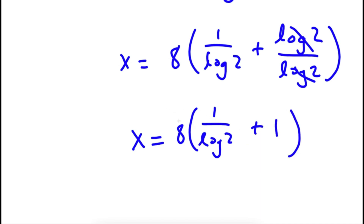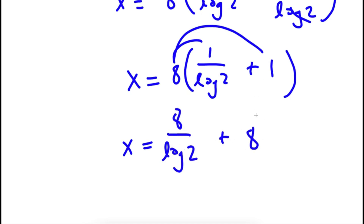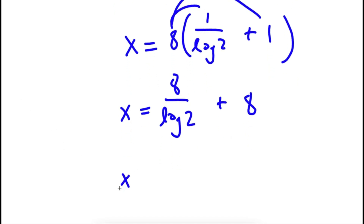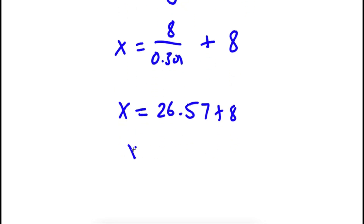Now if I distribute the 8 to both terms, x is equal to 8 times 1 over log 2, which is 8 over log 2, plus 8 times 1 is 8. Now log 2 is equal to approximately 0.301. So I have 8 over 0.301, that's going to equal 26.57, plus 8. So my final answer is 34.57.